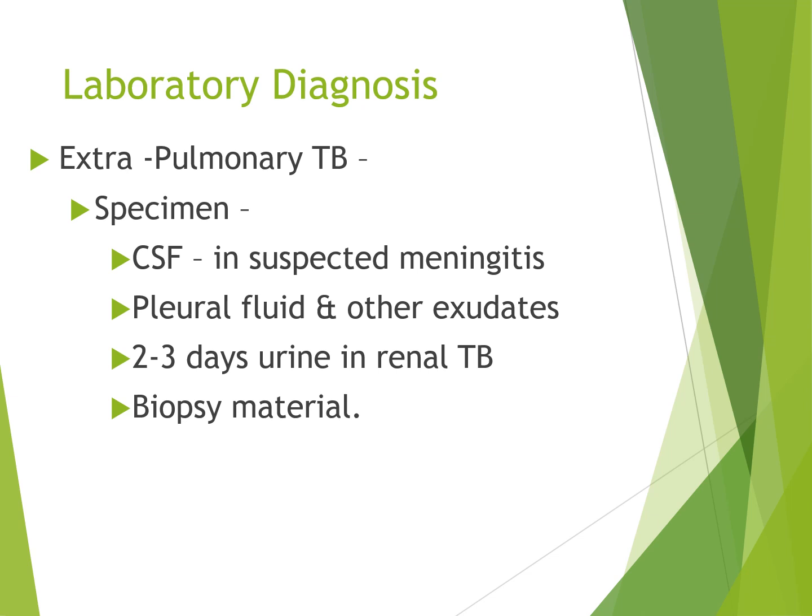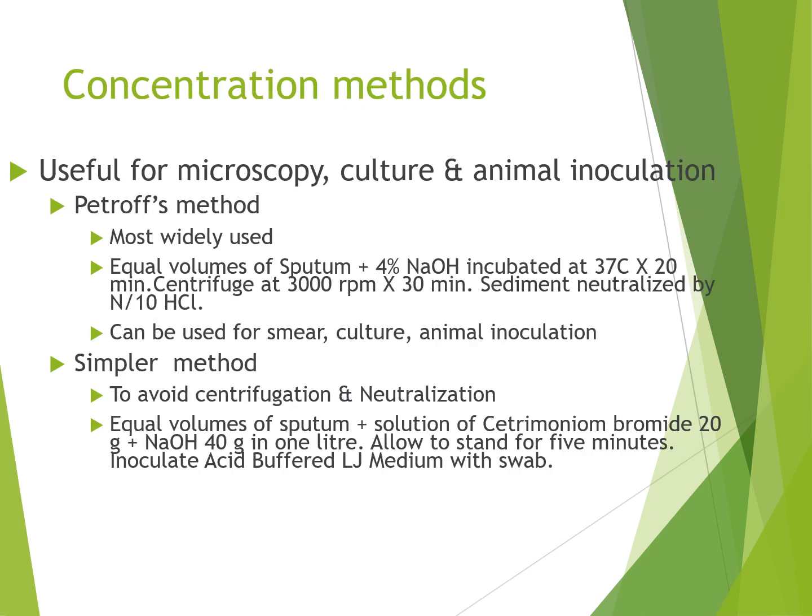For extra-pulmonary tuberculosis, cerebrospinal fluid with suspected animal inoculation, pleural fluid and other exudates, 24-hour urine for renal tuberculosis, and biopsy are used. Methods include Petrov's method, useful for microscopy, culture, and animal inoculation. Equal volumes of sputum and 4% sodium hydroxide are incubated at 37 degrees for 20 minutes, centrifuged at 3000 rpm for 30 minutes, and the sediment is neutralized with 1-in-10 hydrochloric acid for smear, culture, and animal inoculation. A simpler method uses equal volumes of sputum and a solution of cetrimide 20g and sodium hydroxide 40g per litre, allowed to stand for 5 minutes, then inoculated onto acid-buffered LJ medium with a swab.